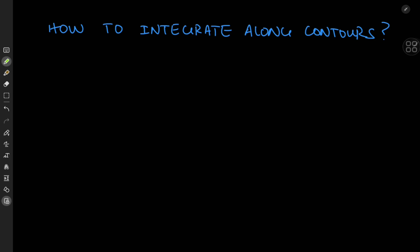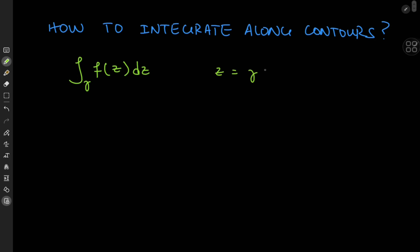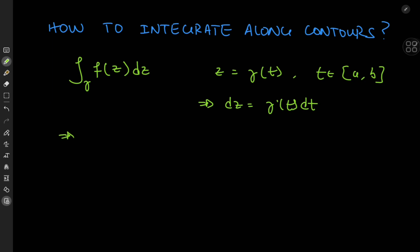So how do we integrate along contours? You need a function f(z) that's continuous along the contour gamma. The integral over gamma of f(z) is essentially a line integral along the contour via some parametrization. If z is parameterized by gamma(t) where t belongs to the interval [a, b], this implies dz = gamma'(t) dt. So the integral over gamma equals the integral from a to b of f(gamma(t)) times gamma'(t) dt.